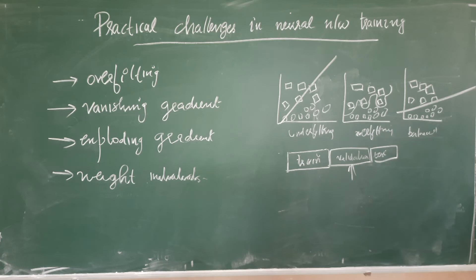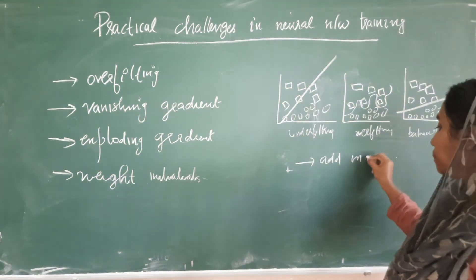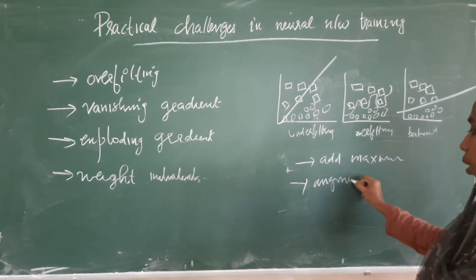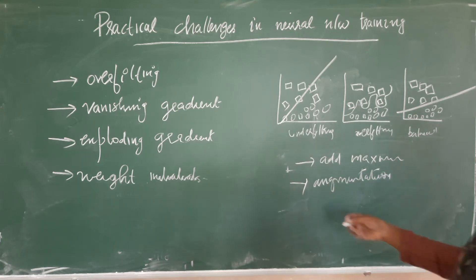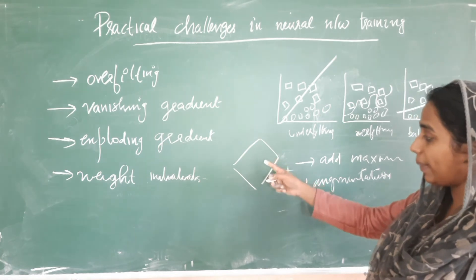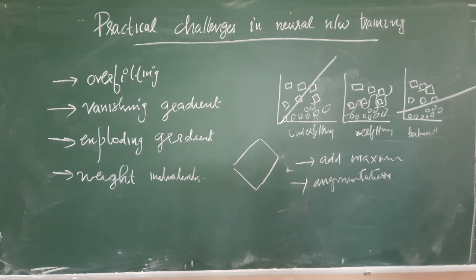The solutions to overfitting: one solution is to give sufficient data — add maximum data as input. Now, if you do not have enough data, you can perform data augmentation. Augmentation means making necessary changes to the existing data so that the changed data looks like new data. For example, if it was the image of a dog facing left, we can flip the image so that the dog will now be facing right and the system will treat it as new data. In image processing, you can use rotation by different degrees, flipping, and zooming to give the system an impact of new data.